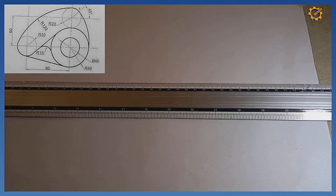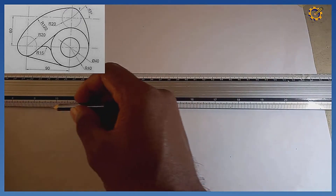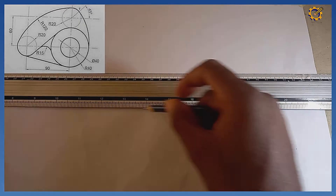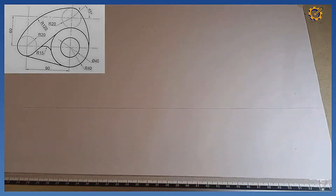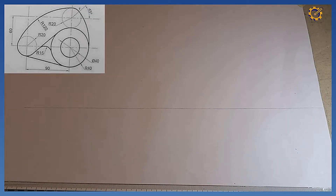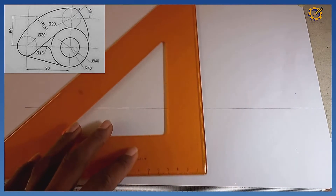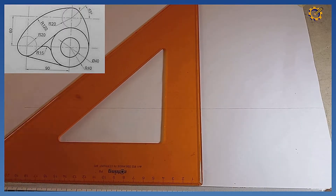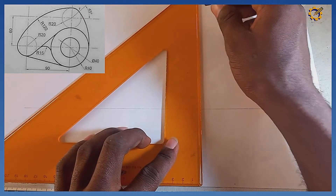The very first thing we are going to do is produce a thin horizontal line, then produce a perpendicular line to it — a vertical line — in this manner.